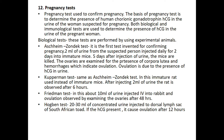Biological tests are performed using experimental animals. They include the Aschheim-Zondek test — the first test invented to confirm pregnancy. Two ml of urine from the suspected person is injected daily for two days into immature mice. Five days after the injection, the mice are killed. Ovaries are examined for the presence of corpora lutea and hemorrhages, indicative of ovulation.